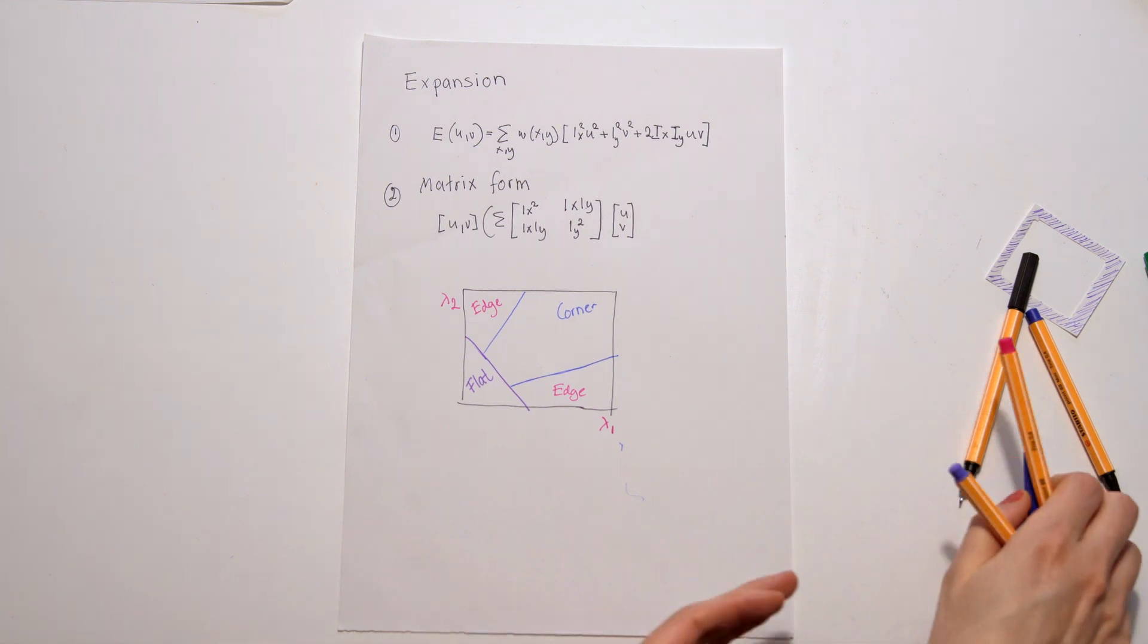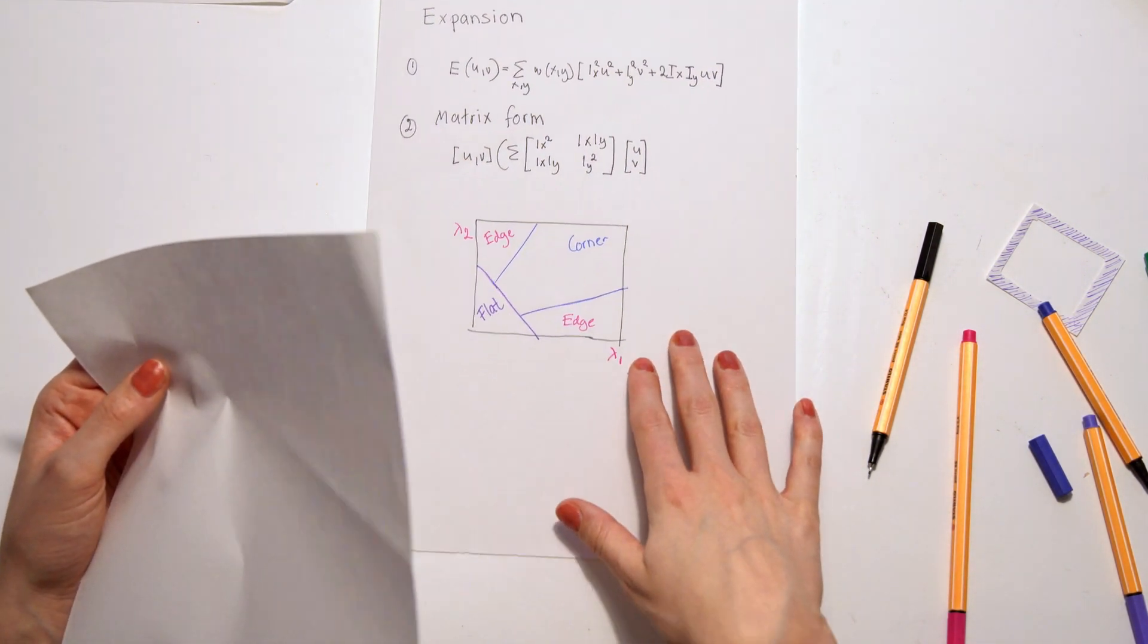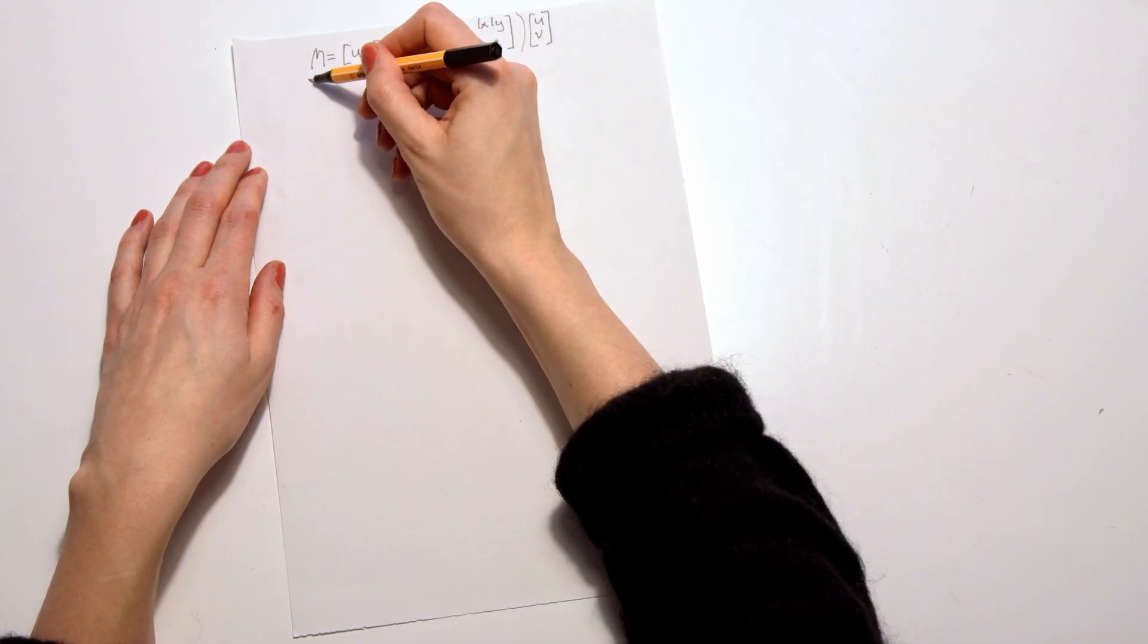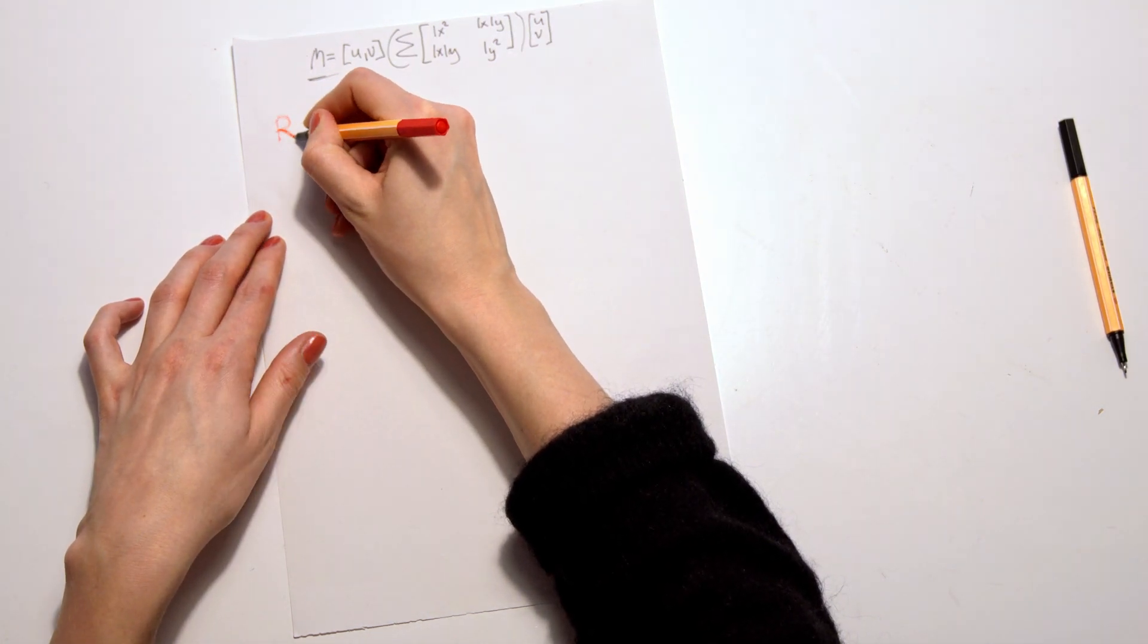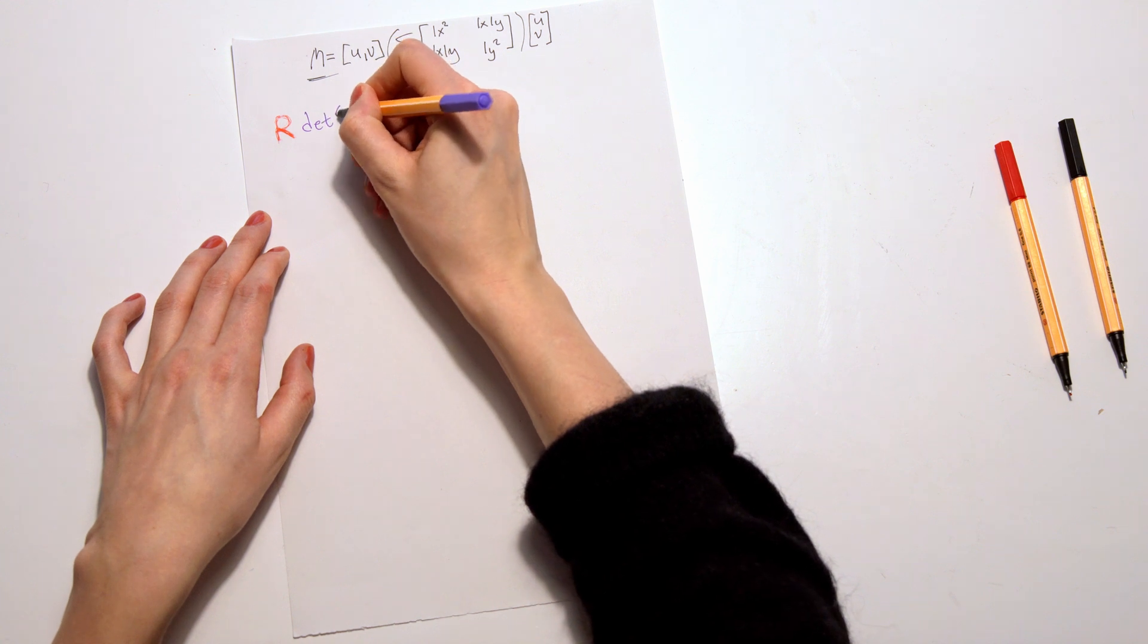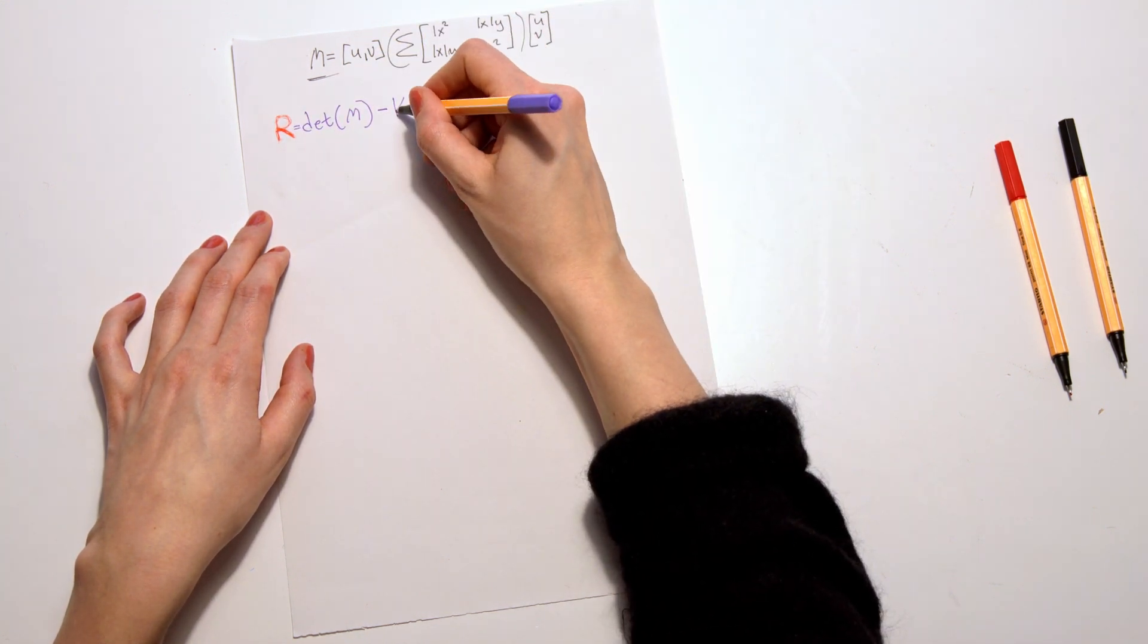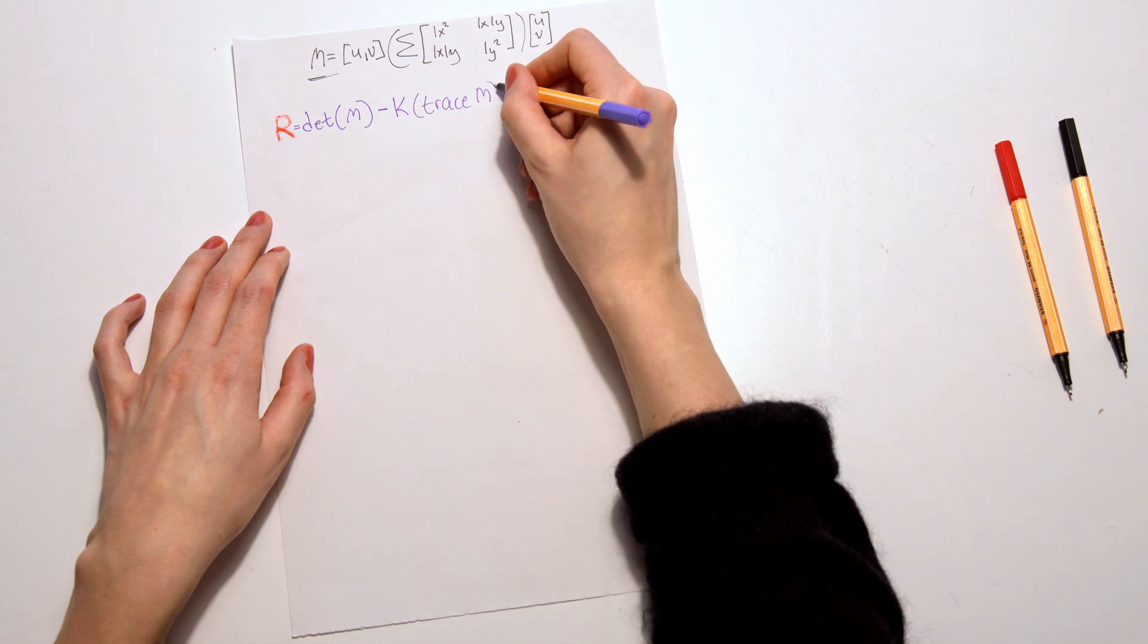And another measure that I've seen that people do is Gouraud classifier. So you have this form, this matrix form, and we can call it M. So that's what we will call M. And when we want to calculate R, we will use the determinant of our matrix M minus K, which is the constant, the determinant of the trace of the matrix M squared.